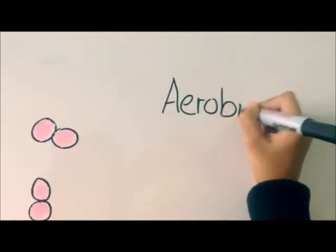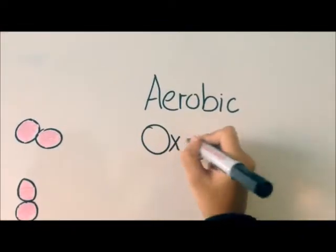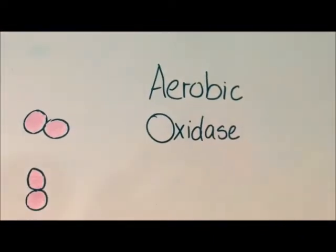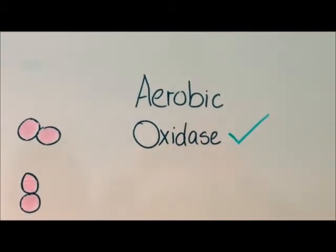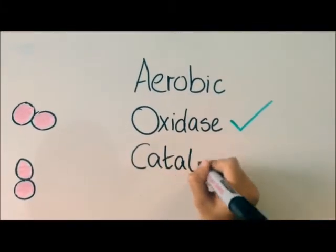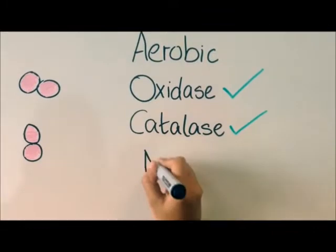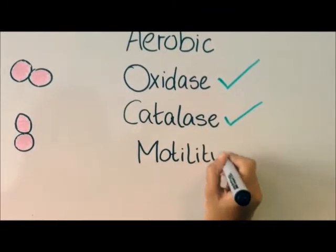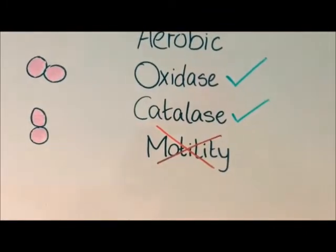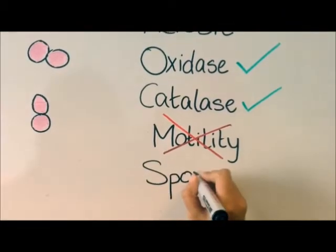This bacteria can be known as aerobic or anaerobic. It actually grows better in anaerobic conditions. In the basic characterization test it will show a color change on the oxidase strip from grey to purple. It will also show bubbles in the catalase test. These bacteria cannot move and they cannot form spores.